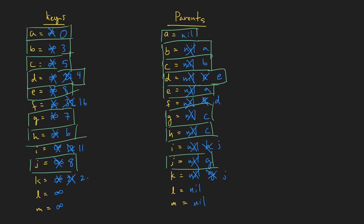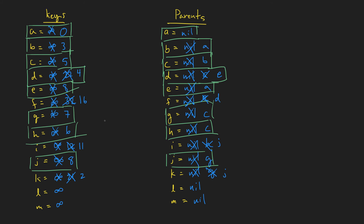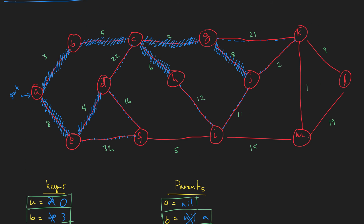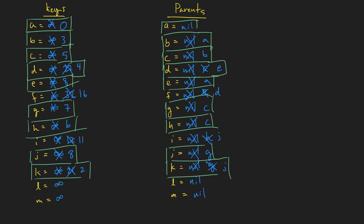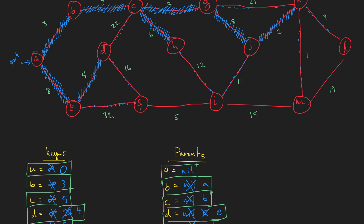We've updated our keys based on J's adjacency list and there's nothing left to update. Looking through the list of keys, 2 is our smallest value, so K gets added to our tree with parent J. Now we're at K. G is already in the tree so we skip that. K is connected to M at weight 1 and L at weight 9. We update M to 1 and L to 9, both with parent K.